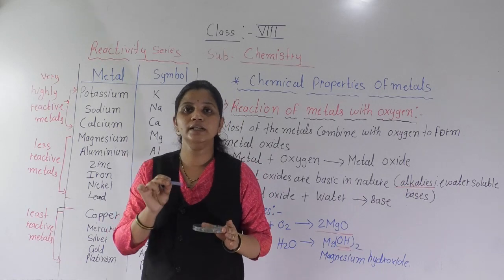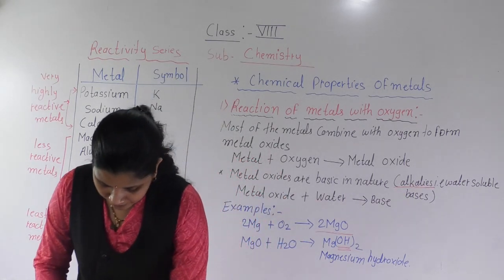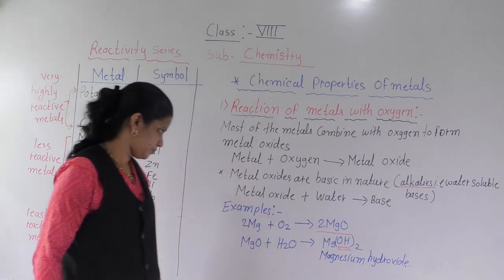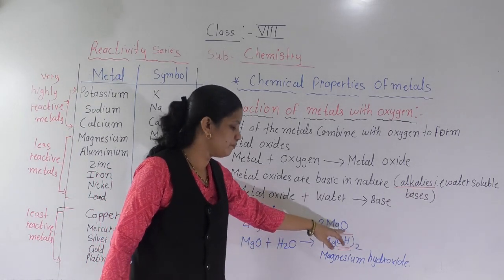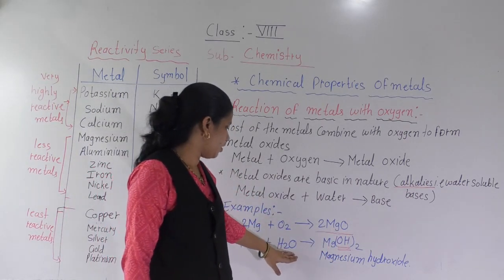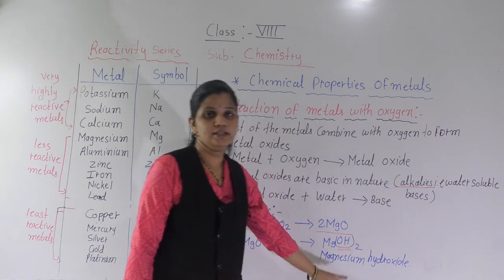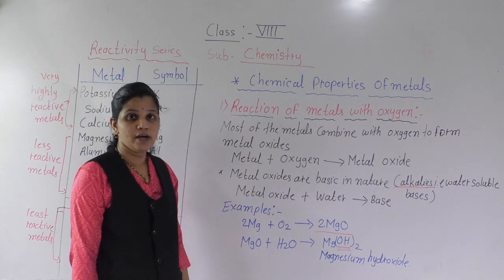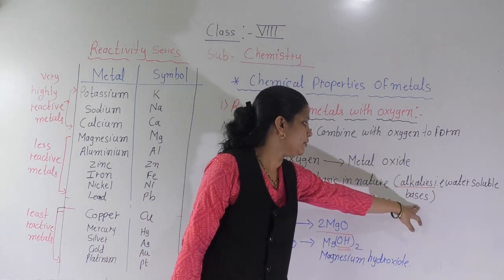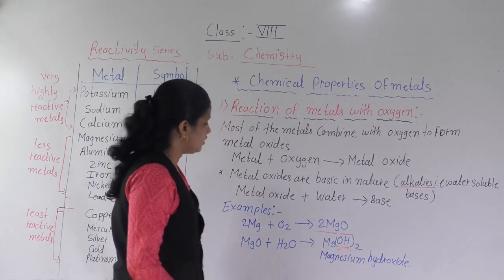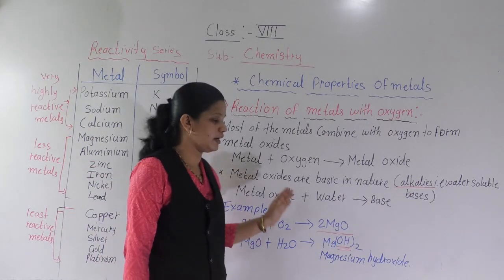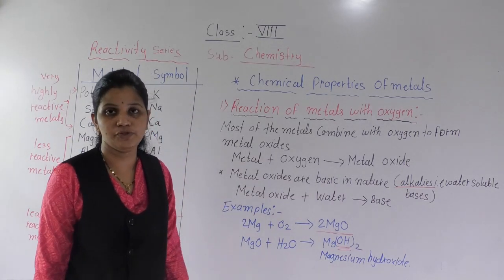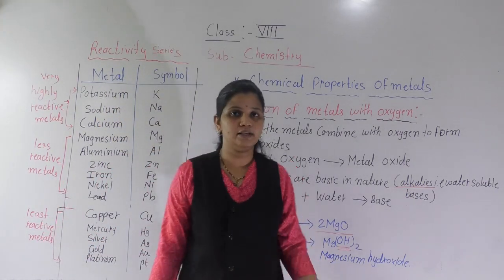This practical we did last year also. So whenever metals react with oxygen, they form metal oxide. Magnesium oxide reacted with water forms magnesium hydroxide, and it is basic in nature. This magnesium hydroxide is known as an alkali. Why? Because it is a water-soluble base. Write all these points and the reactivity series in your chemistry notebook.